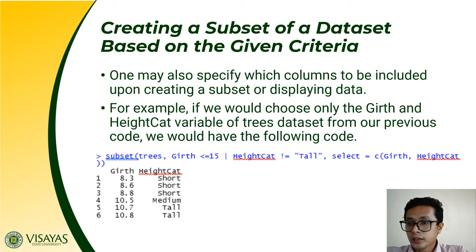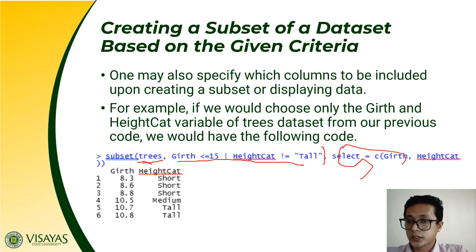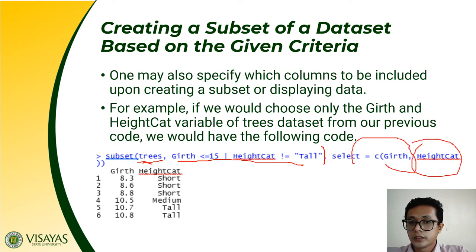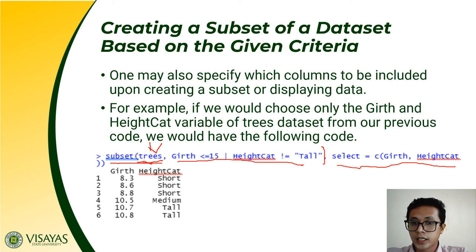You may also specify which variables to display within the subset. Using the same trees dataset and the same OR condition, add a select argument: subset(trees, Girth <= 15 | height_cat != 'tall', select = c(Girth, height_cat)). This displays only the girth and height_cat variables of the matching entries, allowing you to specify exactly which columns appear in the output.